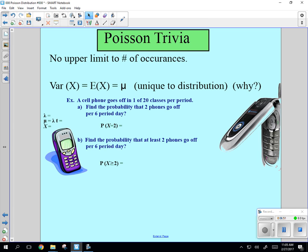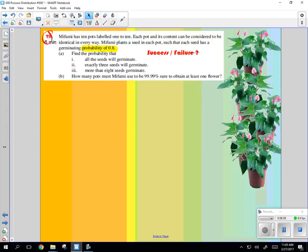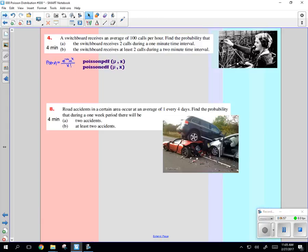Your assignment is to do all of these, three, and then the rest of these, 1, 2, 4, and 8. We'll finish those off. More poisson tomorrow.